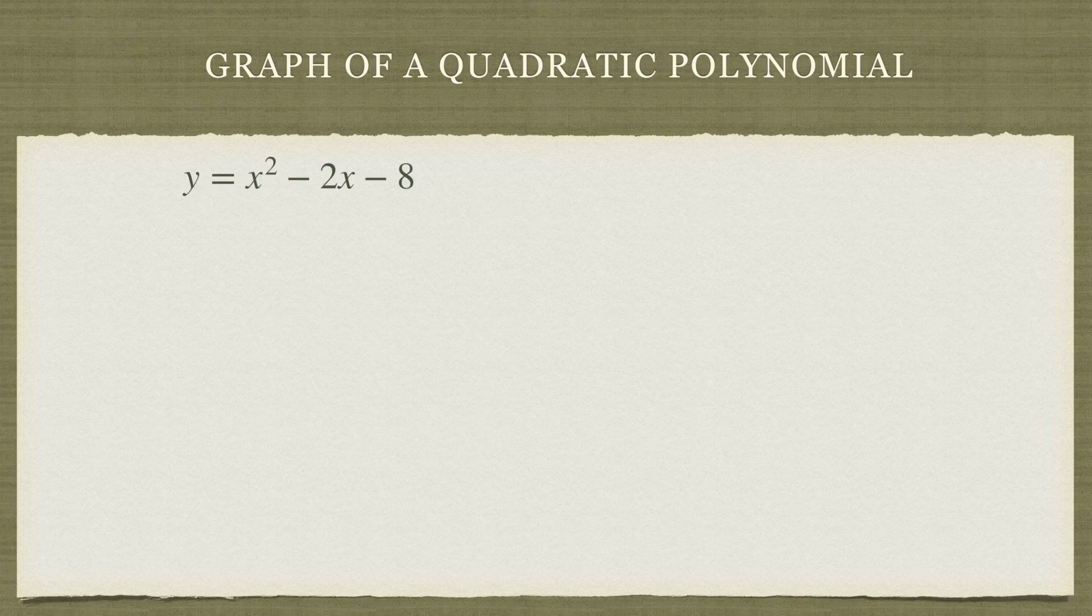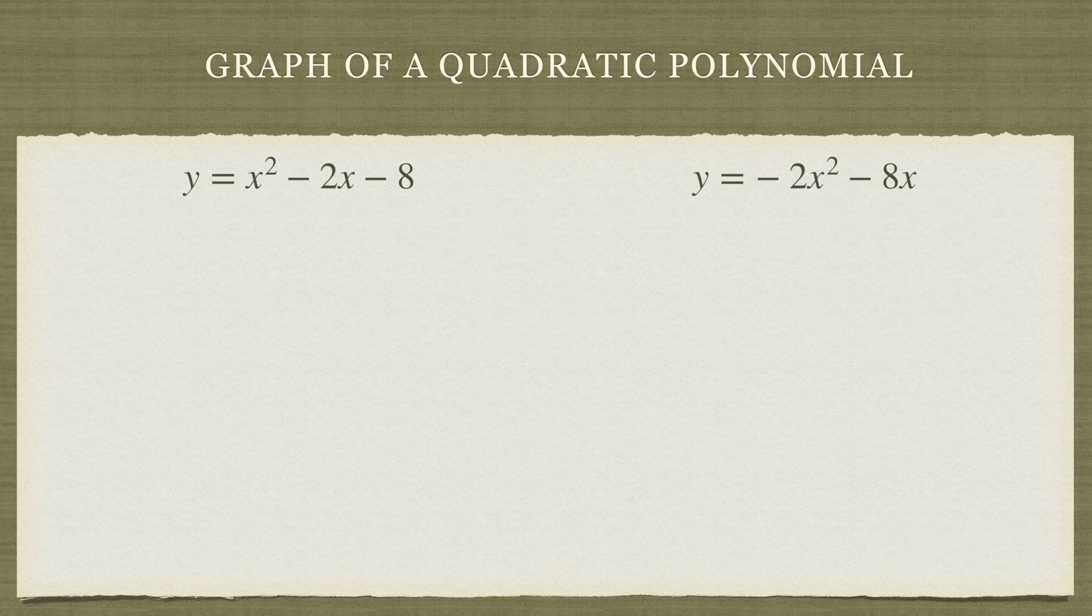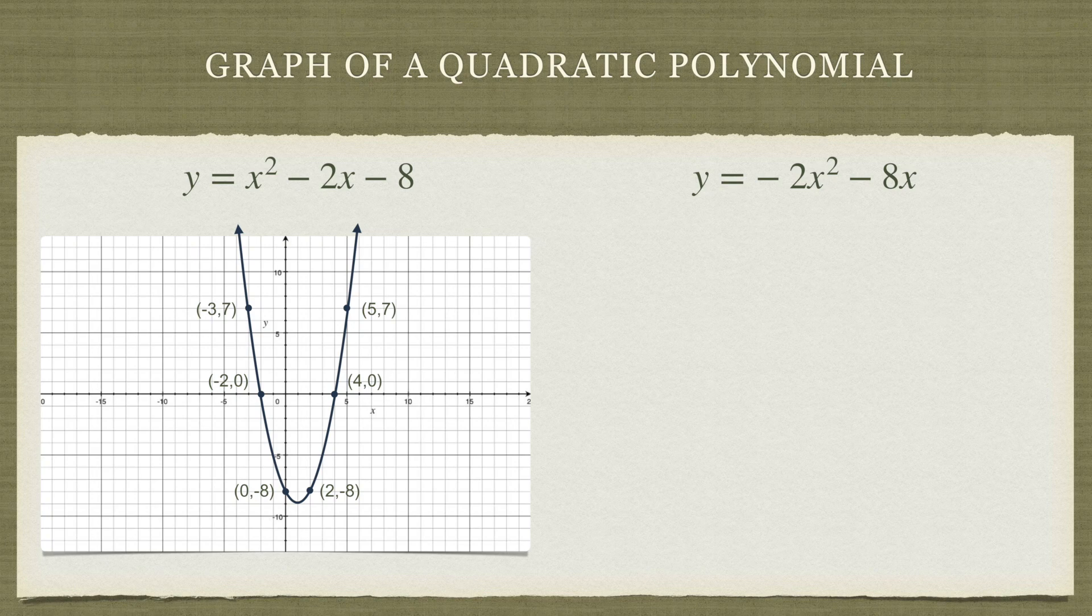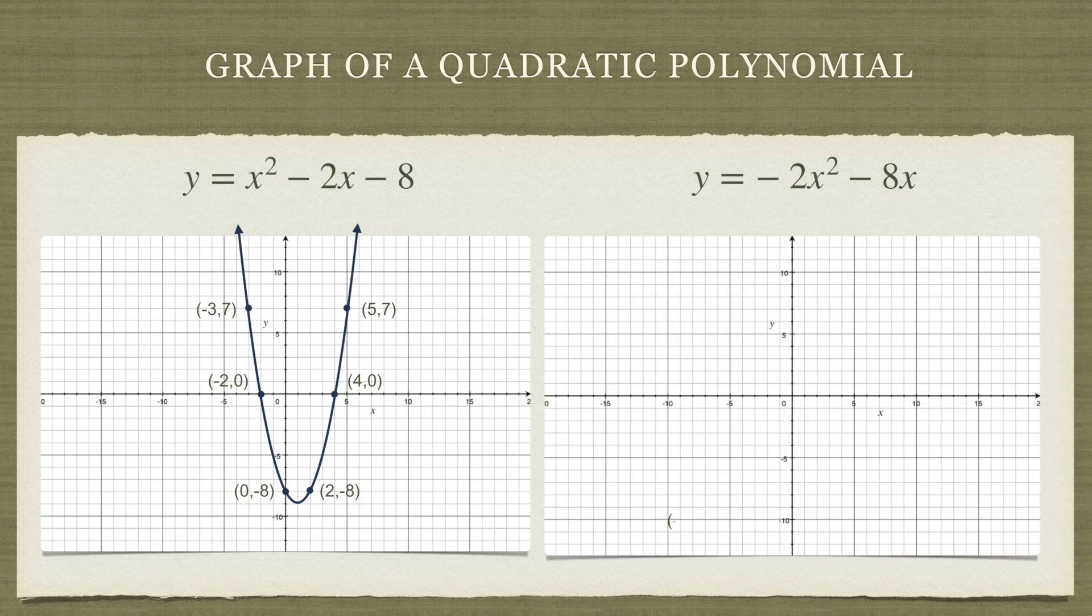We started out with drawing the graph of y equals x squared minus 2x minus 8, then we drew the graph of y equals minus 2x squared minus 8x. The first polynomial graph looked like this with these points, and our parabola looked like this. In the second example, these were the points and our parabola this time looked like this.